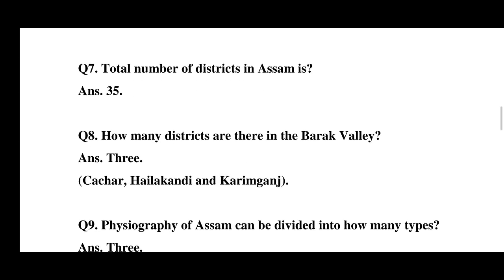Question number 7: What is the total number of districts in Assam? The answer is 35. It was previously 31, but by the direction of the Election Commission of India and the Delimitation Commission, it was changed to 35.